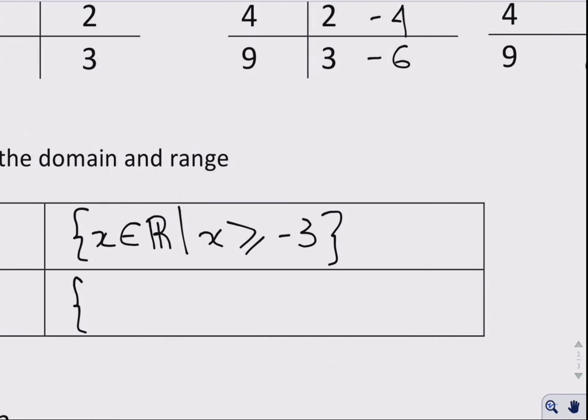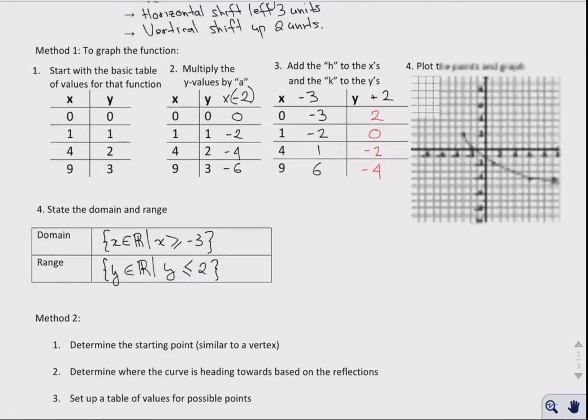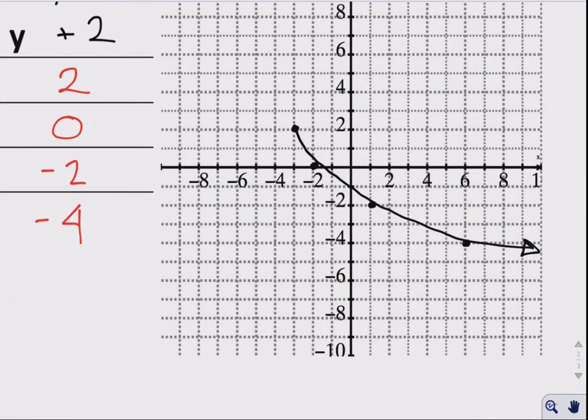And for my range, y is a real number, and y is less than or equal to 2. Why is that? Going back to the graph, well, here's my y value. Y is everything below 2. As far as the range, here's my minimum x value. x is everything above negative 3.